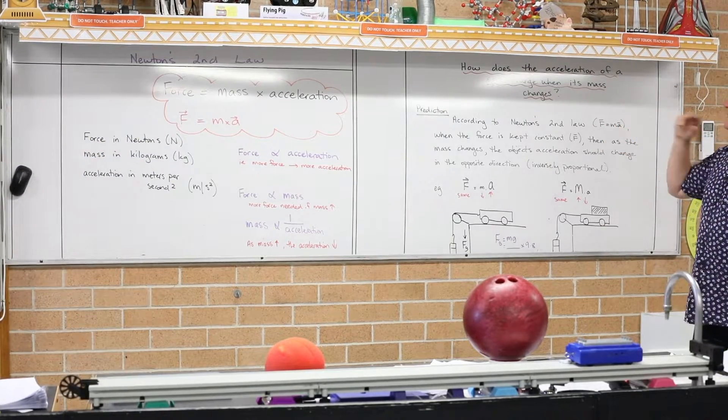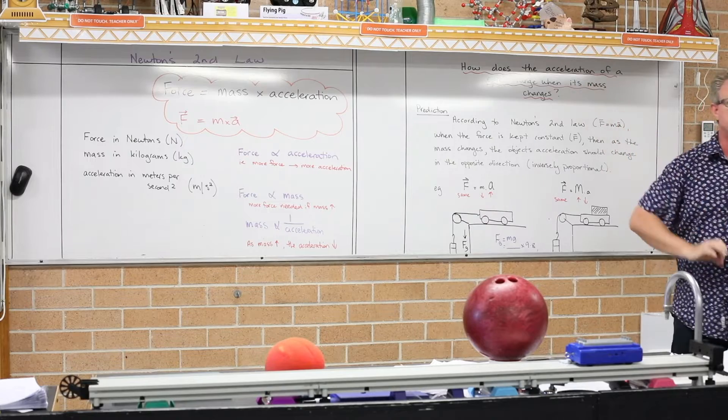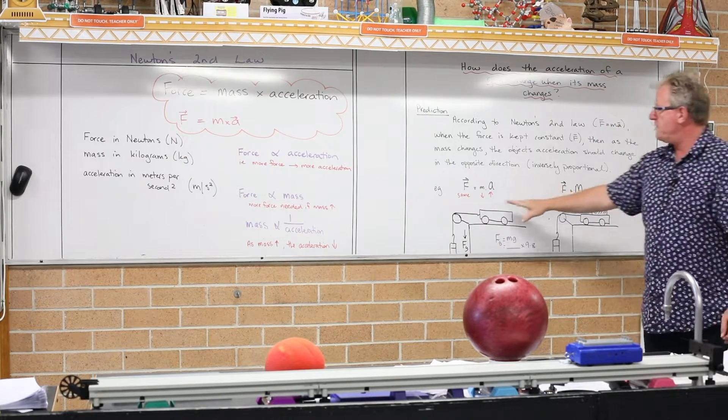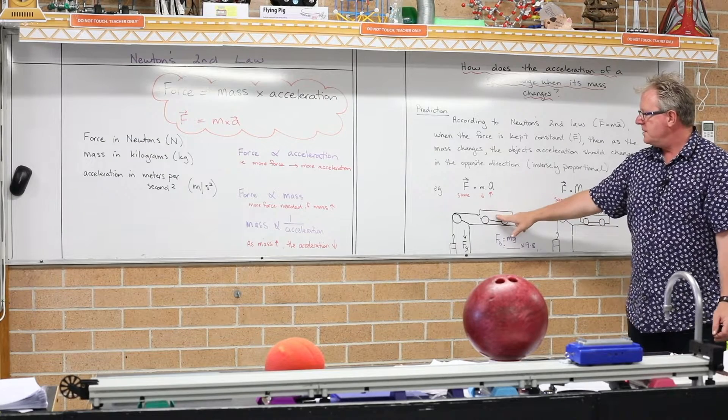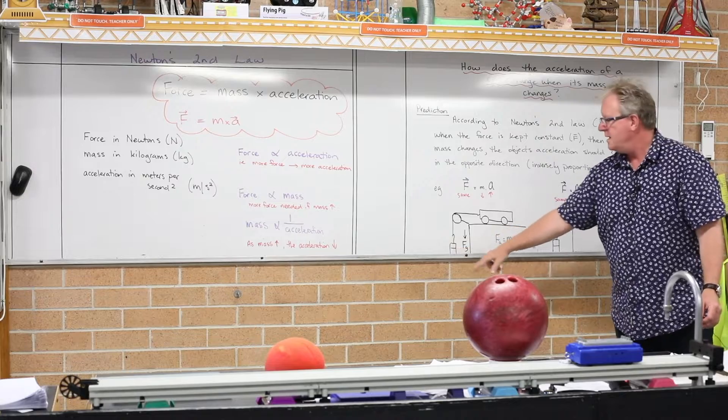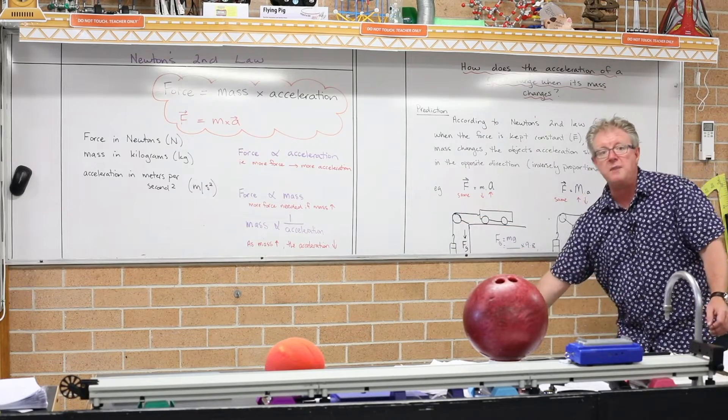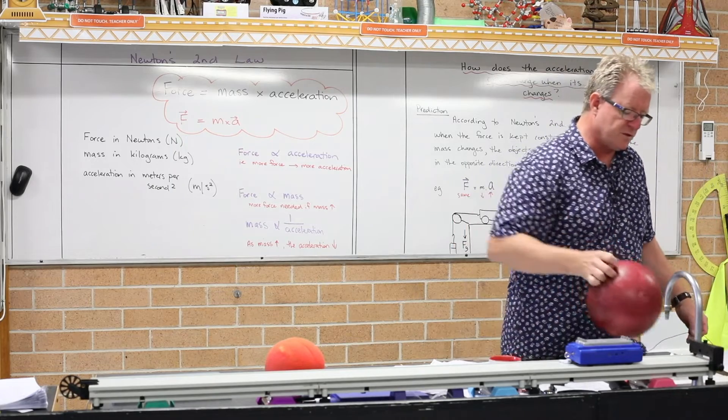It's an inverse relationship and that's what we're looking at today. So this is what we're doing today. We're seeing how does the acceleration of a car change when its mass changes. So we've got two setups here. We've got a car, we've got a pulley, and we've got a mass, a slotted mass. And that slotted mass is being pulled down by the force of gravity.